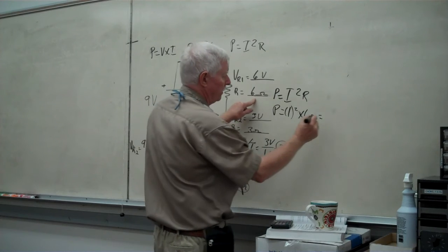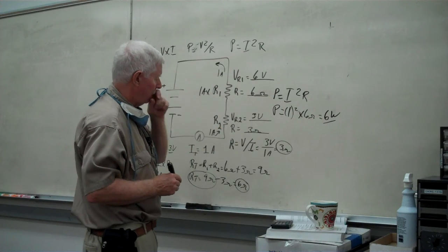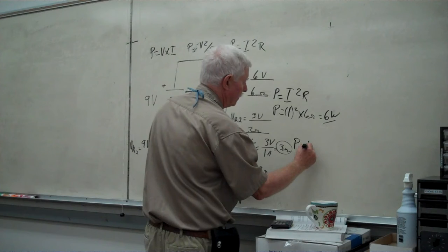And in this particular case, we're going to have 6 watts dissipation from this particular resistor. And this one down here, if we want to use the same method, P is equal to I squared R.